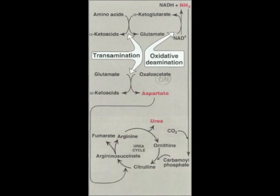Let us begin by looking at how waste is usually removed from the body. The dominant reactions involved in removing amino acid nitrogen from the body are known as transaminations. This class of reactions funnels nitrogen from all free amino acids into a small number of compounds. Then, either they are oxidatively deaminated, producing ammonia, or the amine groups are converted to urea by the urea cycle.